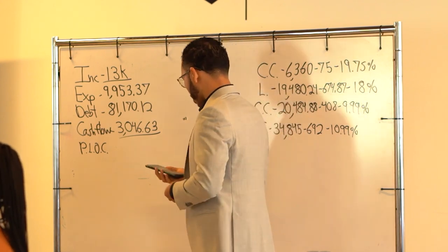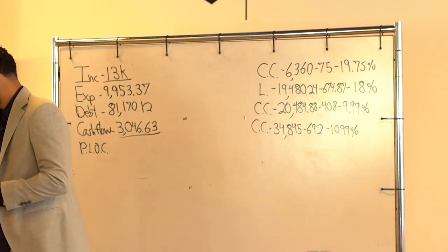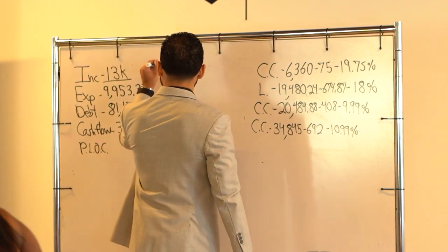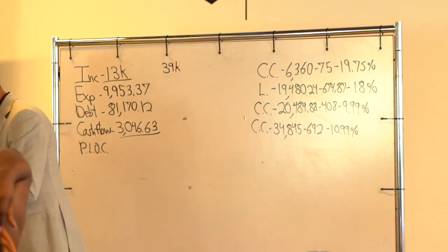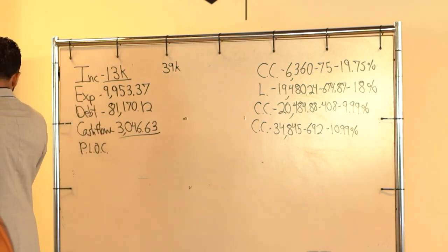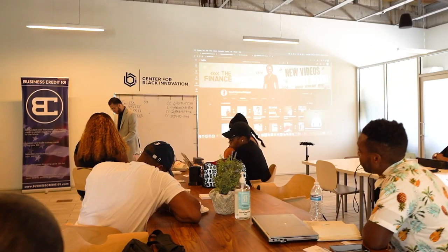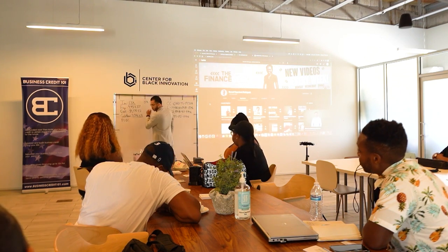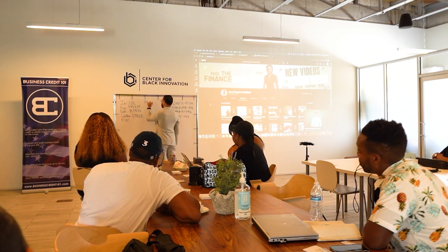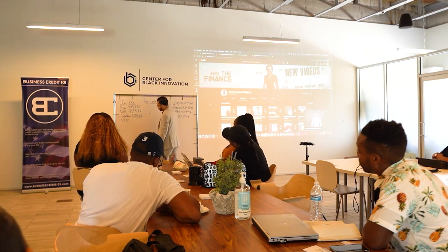The line of credit should be 3 times your annual cash flow. Right. So, when I'm working, so I'll say either 39 grand is 3x their income. Well, you're saying the 3,046.63 times 12 times 3, right? Yeah. So, anywhere from as low as 39 to as high as 190.